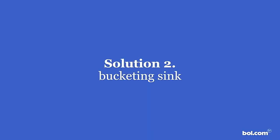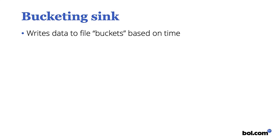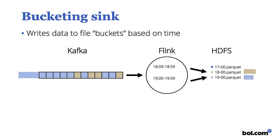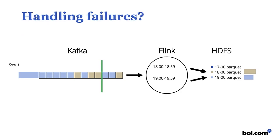So we moved to another solution: something called the Bucketing Sink in Flink, which promises to write data into bucket files based on time. The data is not stored in memory anymore; instead Flink writes directly to files. The data comes in and gets sorted into these buckets — nothing is held in Flink memory. But how do we handle failures in this case?